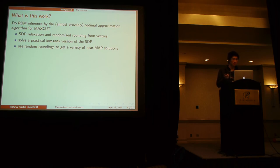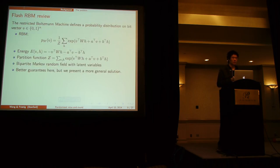And it's based on semi-definite programming relaxation and random rounding from vectors. And to make them practical, we actually solve a low rank version of it as opposed to the full SDP. And then you use some random rounding to get a lot of solutions. So just a quick flash. The theory is a little bit nicer in the bipartite case that includes RBMs, DBMs, and so on.